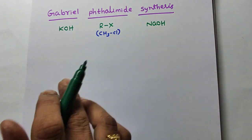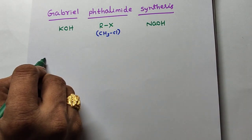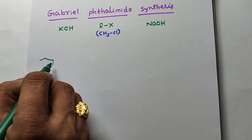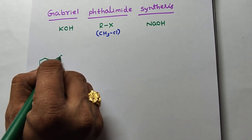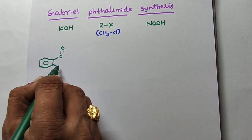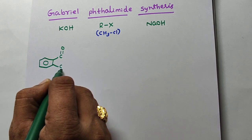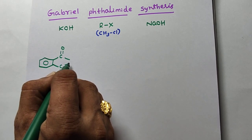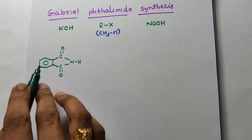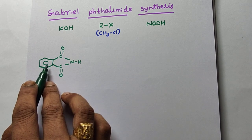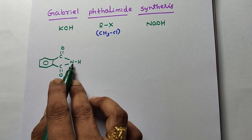Now let us take Phthalimide. How do you write Phthalimide? First, take a benzene ring. At the top, C double bond O; at the bottom, C double bond O; and in the middle, NH. That is the structure of Phthalimide.